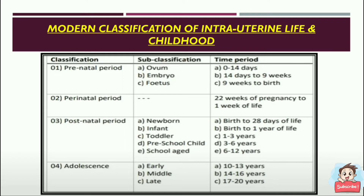Apart from all these, we also have the modern classification of intrauterine life and childhood. First is the prenatal period, where the ovum develops into embryo and which in turn develops into fetus. The ovum stage is 0 to 14 days; embryo is 14 days to 9 weeks; and fetal development takes place from 9 weeks to birth. The perinatal period covers 22 weeks of pregnancy to 1 week of life.